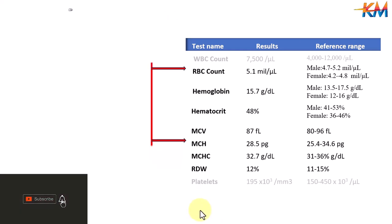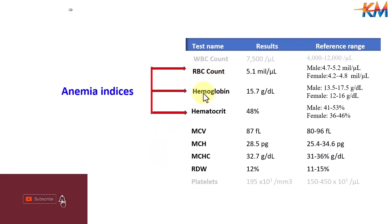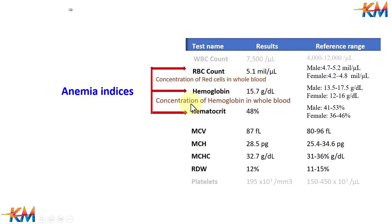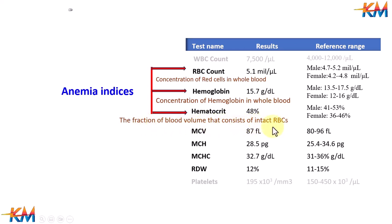If you want to detect anemia, we will focus on only three parameters called anemia indices. The first one is the concentration of red cells in whole blood. The second is concentration of hemoglobin in whole blood. The third is the fraction of blood volume that consists of intact red blood cells.